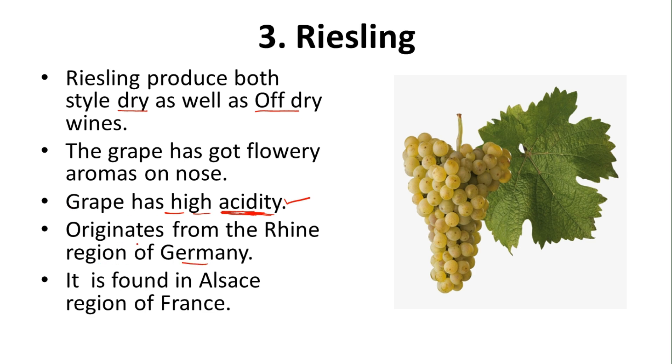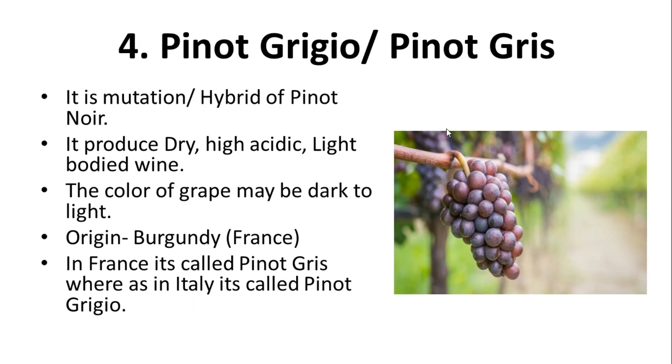Riesling originates from the Rhine region of Germany and is also found in the Alsace region of France.